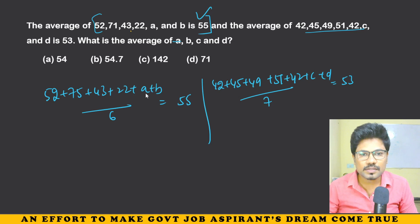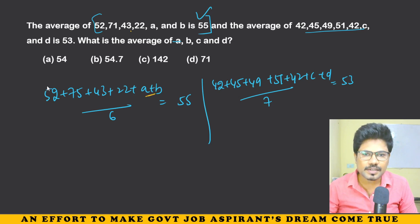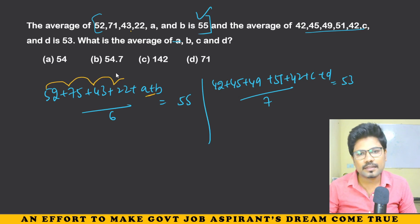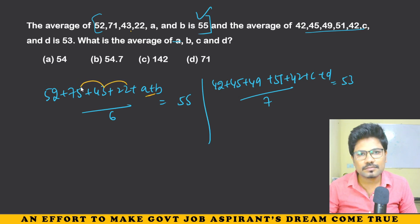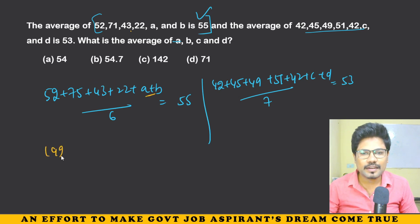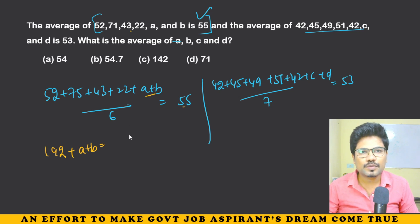But what is A plus B? A plus B — first, let's sum: 120, 160, 180... 185, 190, 192. So 192 plus A plus B is equal to 6 into 55, which is 330.